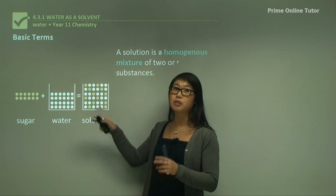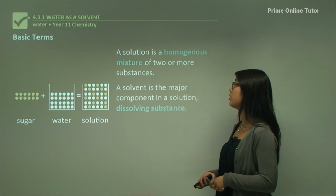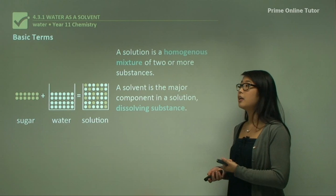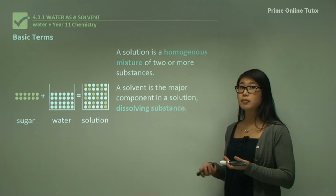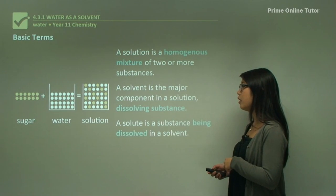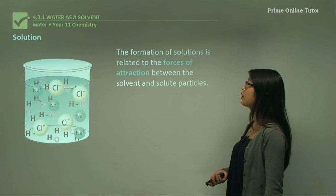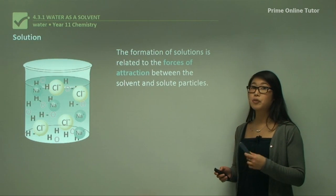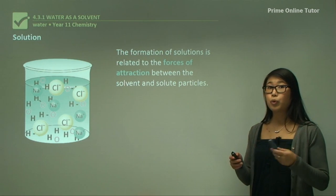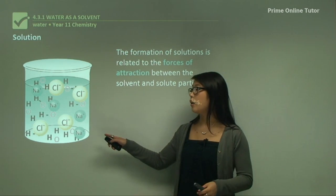All the sugar molecules are equally separated in the water solution. A solvent is the major component in a solution — it's the dissolving substance, usually a liquid like water. A solute is the substance being dissolved, like sugar. The formation of solutions is related to the forces of attraction between the solvent and the solute particles.